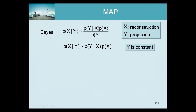Here y is the projection and x is the reconstruction, and we have to maximize the posterior. This is Bayes' rule — we delete the marginal term and keep the rest. If you read papers, this is called the posterior, this is called the likelihood, and this is called the prior. Before doing the measurement you're supposed to know the prior already — we know that images are smooth whether we do a scan or not. Then we do the acquisition, which provides additional evidence — the likelihood. The combination of what we already knew and what we learned from the data is called the posterior.